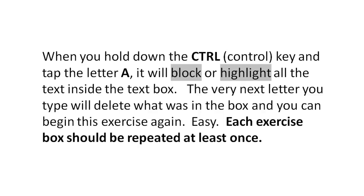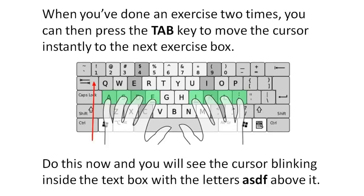Each exercise box should be repeated at least once. When you have done an exercise two times, you can then press the Tab key to move the cursor instantly to the next exercise box. Do this now and you will see the cursor blinking inside the text box with the letters A, S, D and F above it.